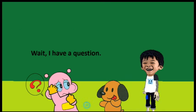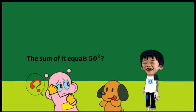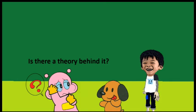Wait, I have a question. Why is it that 50 odd numbers starting from 1 to 99 — the sum of it equals 50 squared? Is there a theory behind it?